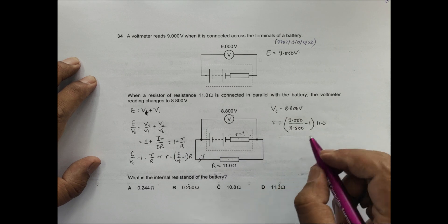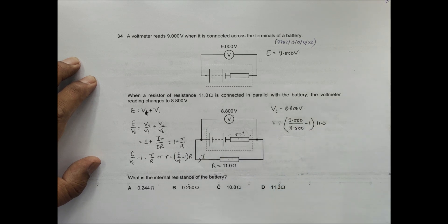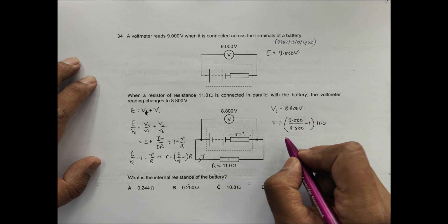This equals 9 divided by 8.8 minus 1 times 11, which becomes 0.25.